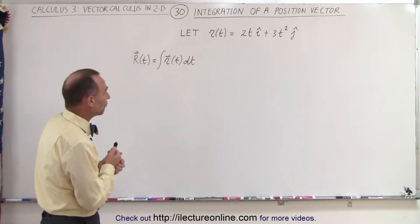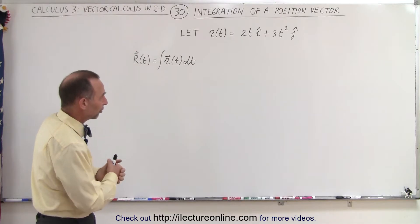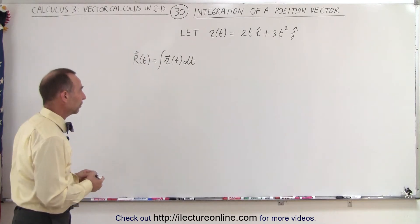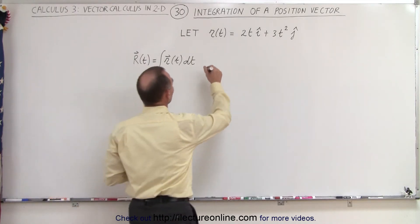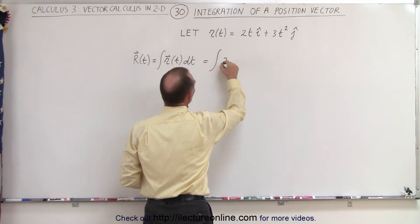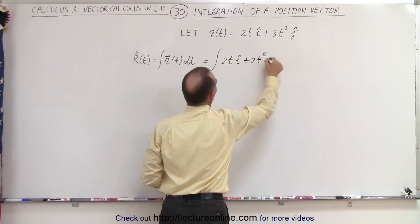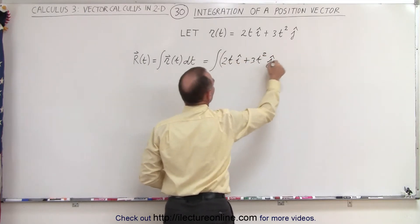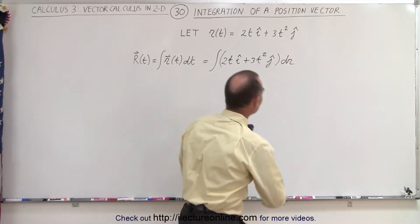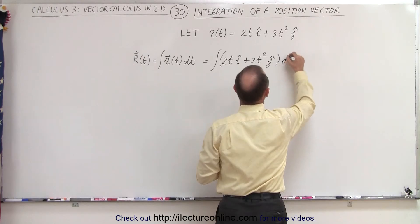Let's integrate the position vector defined by the vector 2t in the i direction plus 3t squared in the j direction, and let this represent the integral of that position vector. That would be equal to the integral of 2t in the i direction plus 3t squared in the j direction, times dt — not dr, because t is our parametric variable.